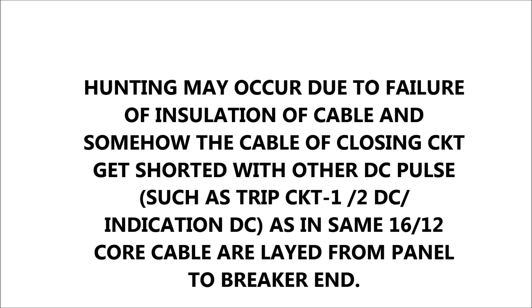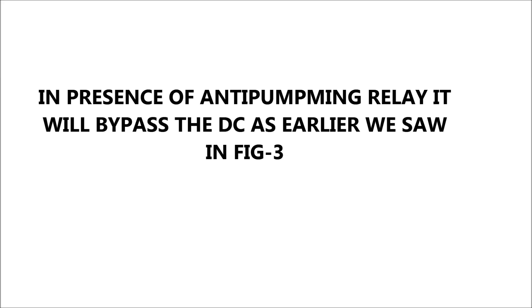In the same control cable — that is, a 12 or 16 core cable — different cables are laid from the panel end to the breaker end, carrying DC pulses from the control switch to the closing coil of the breaker: DC trip circuit 1 positive, trip circuit 2 positive, indication DC, and so on. Failure of insulation of a cable may lead to a situation where the closing circuit gets a continuous DC pulse from another cable, thereby causing hunting in the absence of an anti-pumping relay. But in the presence of an anti-pumping relay, it will bypass the closing pulse to the closing coil, as shown earlier in the circuit diagram.